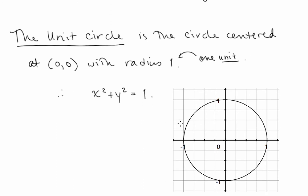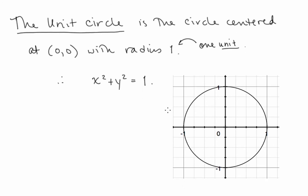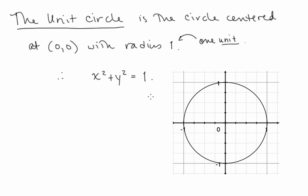The unit circle is x squared plus y squared equals 1. What this is saying is that for every point on this circle, if you take the x value and square it, and you add it to the y value squared, you're going to get 1.